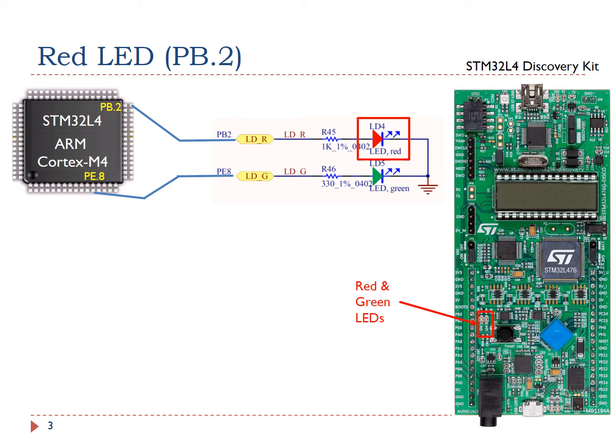In this tutorial, we only focus on lighting up the red LED. The process of lighting up the green LED is very similar. To turn on the red LED, software has to set the pin PB2 to high. To turn off the red LED, software has to set the pin PB2 to low. In this tutorial, I will show you how to set pin PB2 to high.